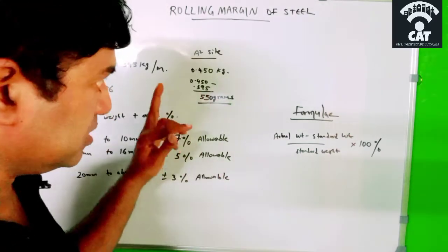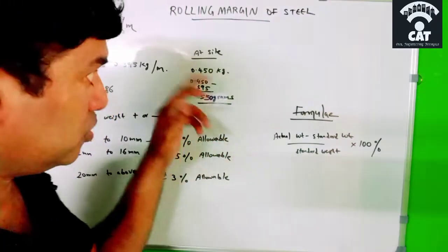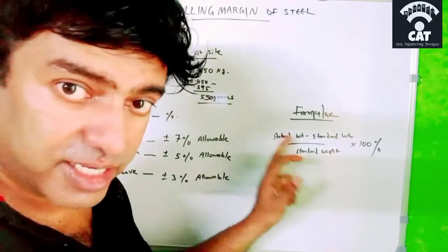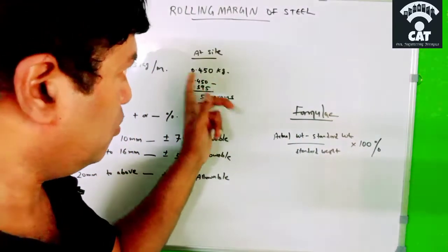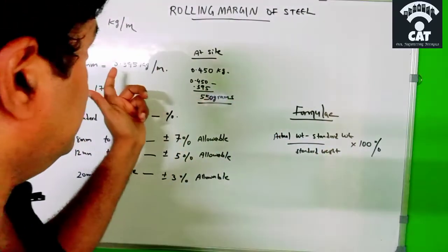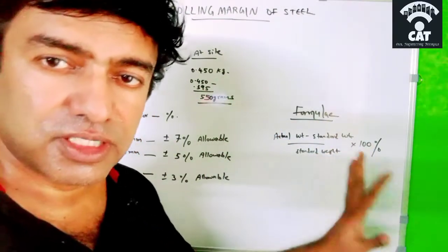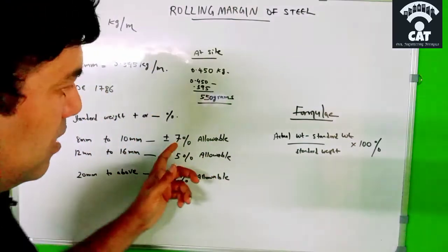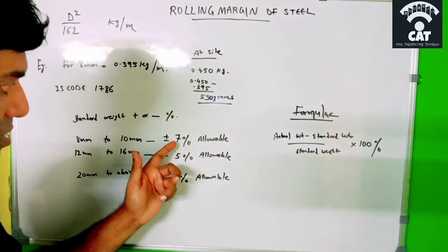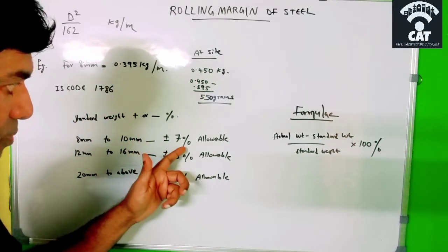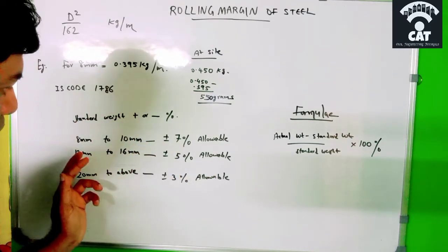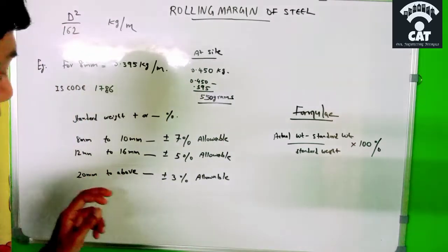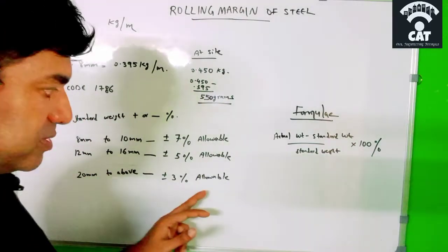Many people don't know about this rolling margin of steel, so when reconciliation comes this will also be taken care of. The formula is: actual weight at site — here it is 0.450 kg — minus standard weight of 0.395, divided by the standard weight of 0.395, multiplied by 100 percent. That gives the percentage increase in the steel weight, and it should be within the permissible limit. For 8mm to 10mm it is plus or minus seven percent per IS Code 1786; for 12mm to 16mm it is plus or minus five percent; and for 20mm and above it is plus or minus three percent.